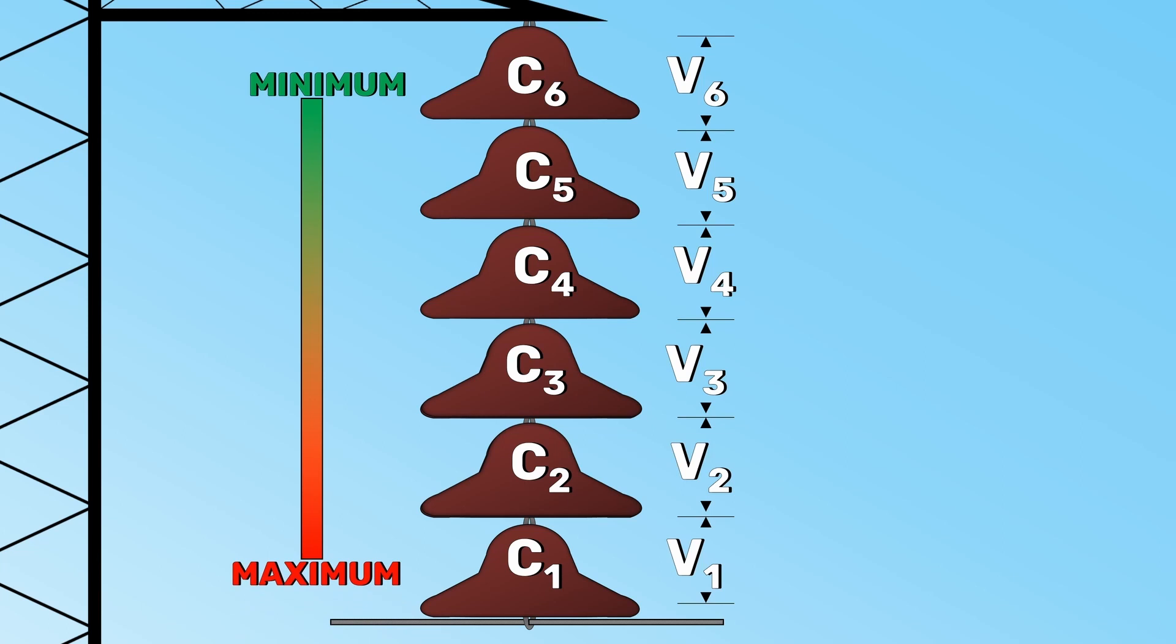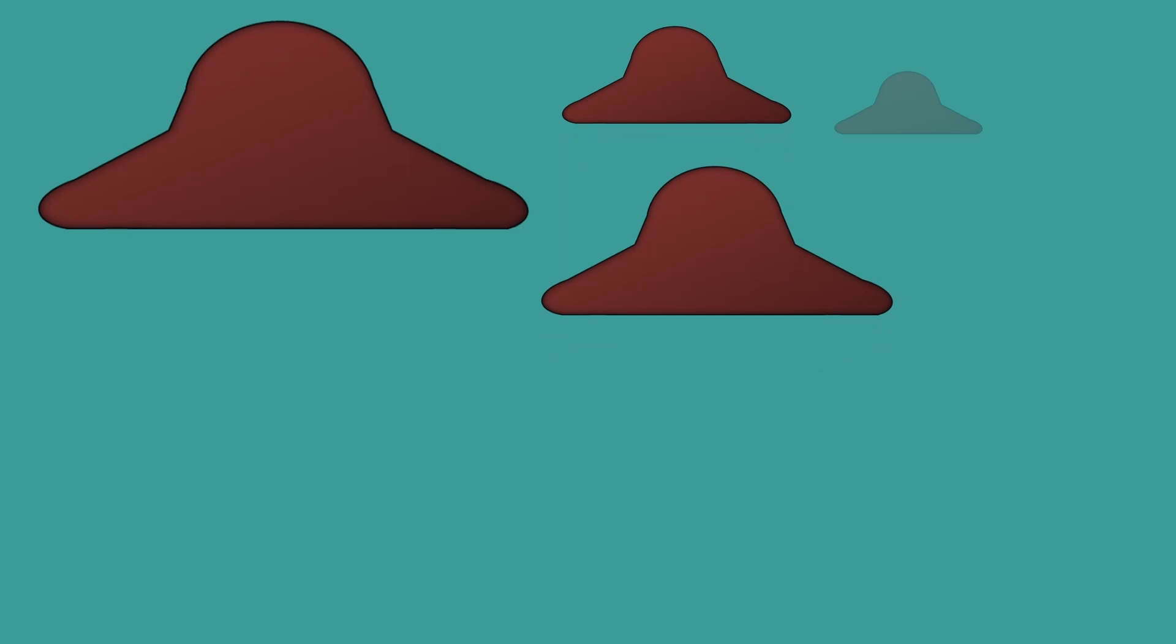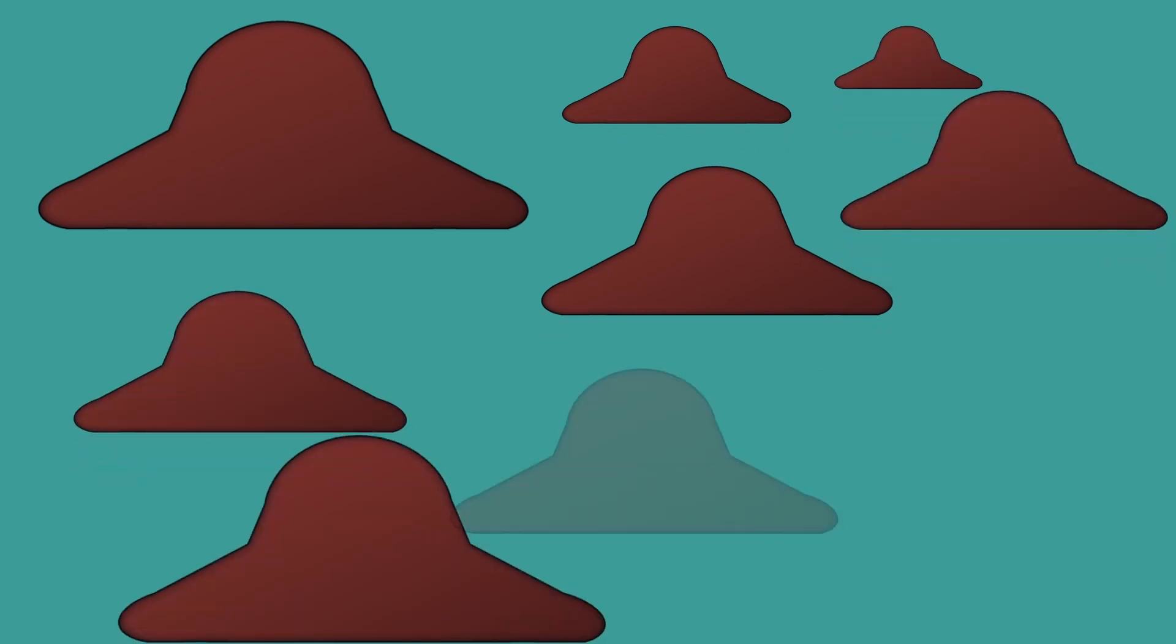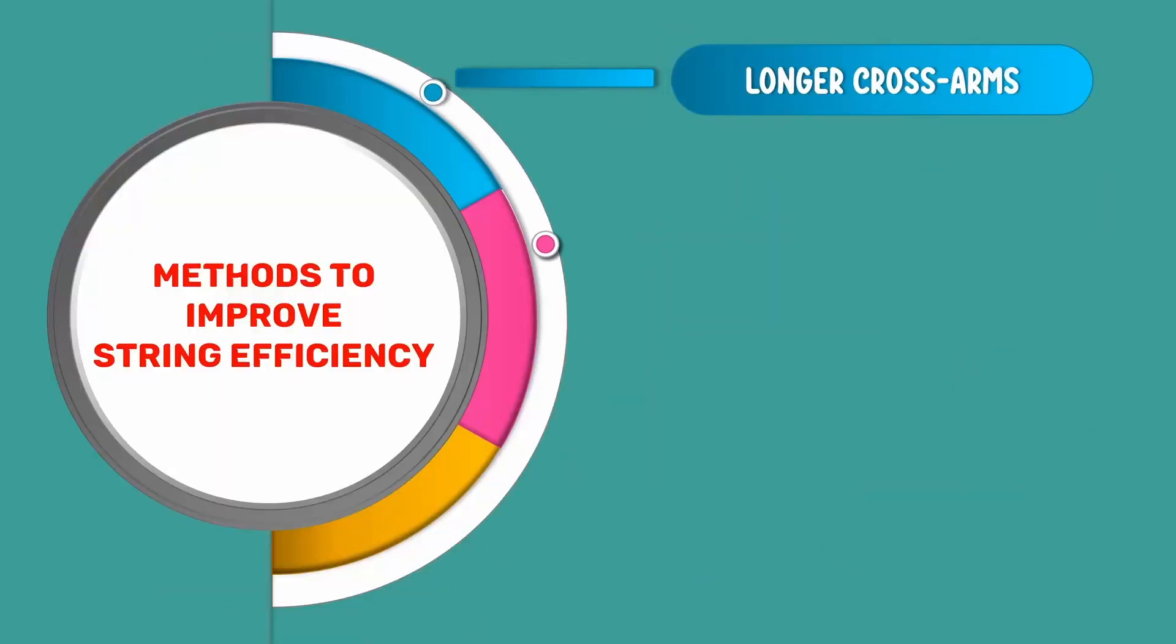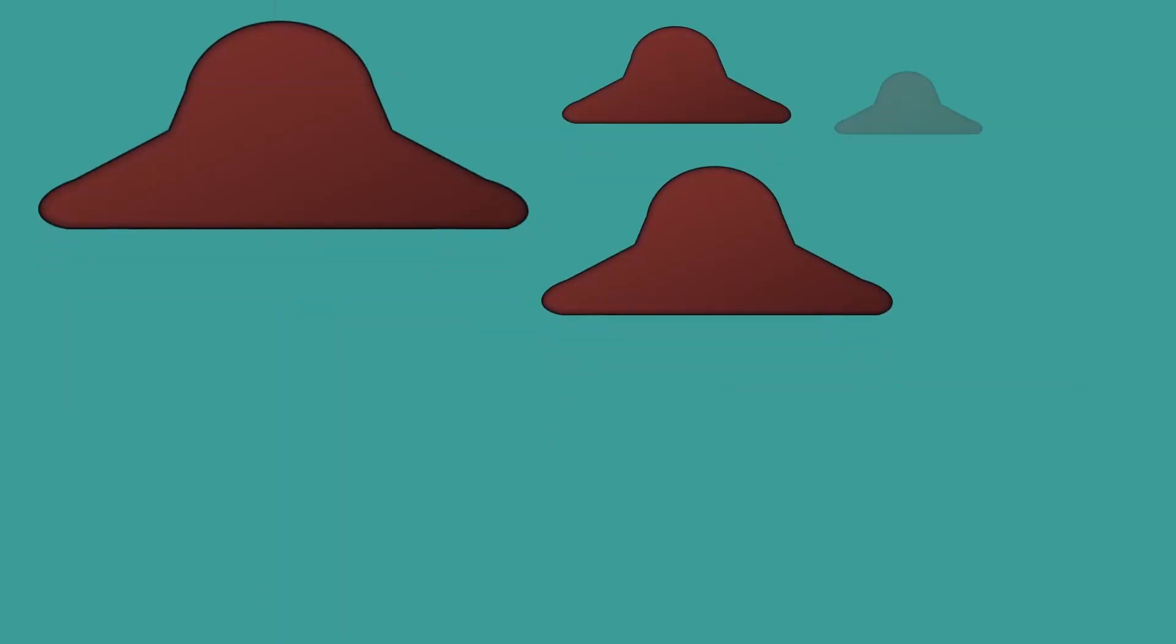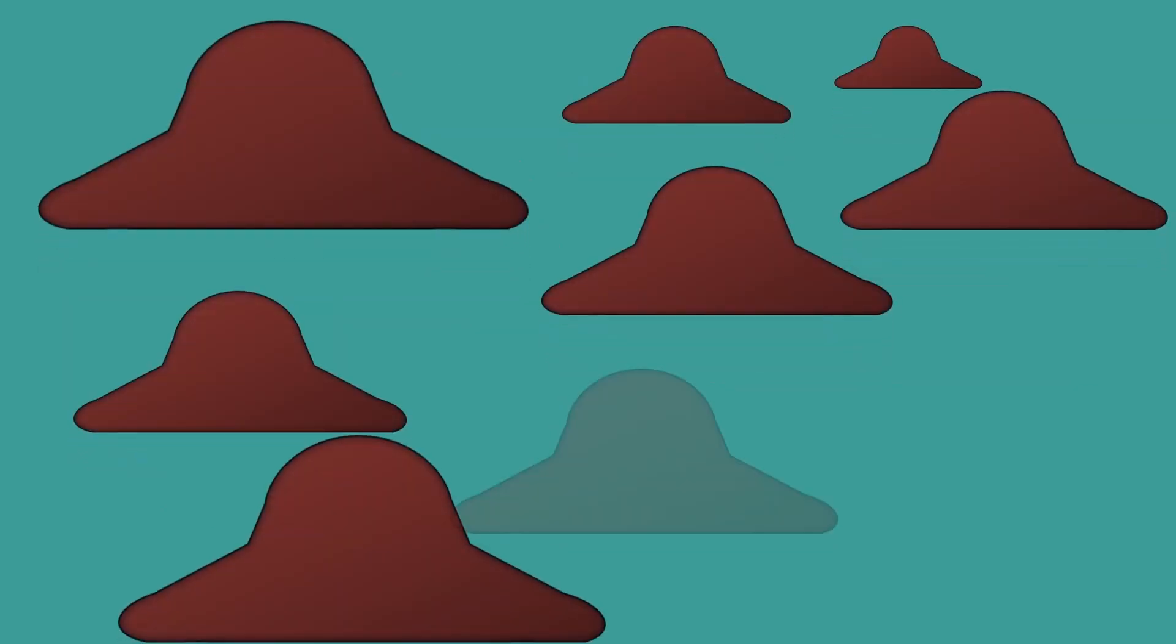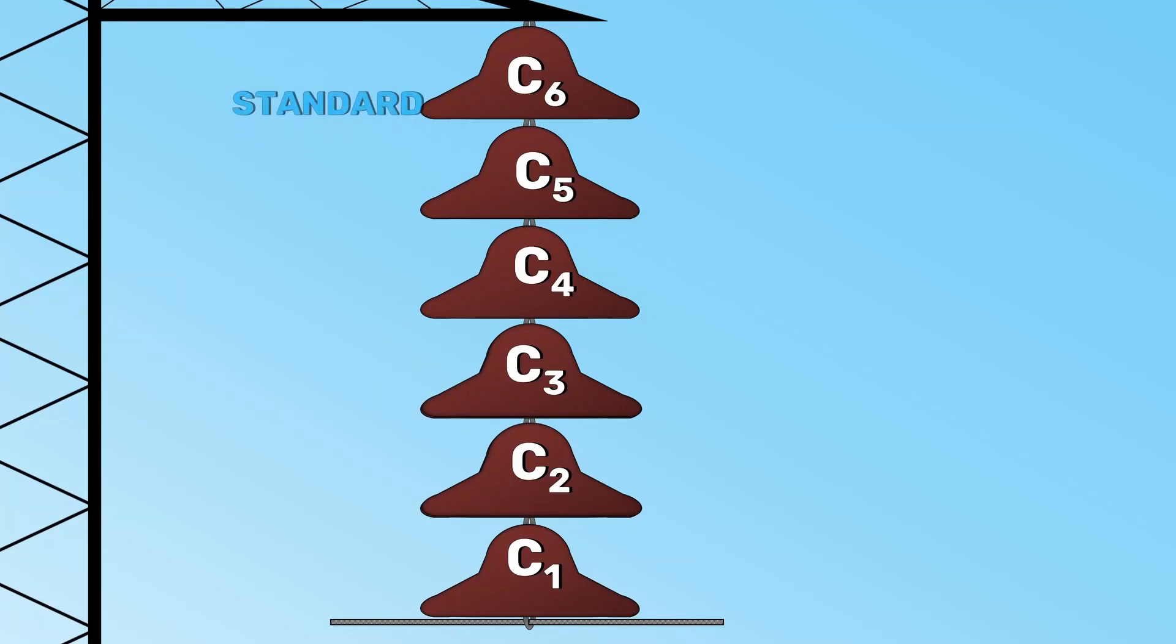In this method, insulator discs of different sizes are chosen so that each has a different capacitance. Yes, here the string efficiency is improved by capacitance grading. This method has a disadvantage that a large number of different sized insulators are required. However, good results can be obtained by using standard insulators for most of the string and the discs with larger capacitance are used just near the conductor.